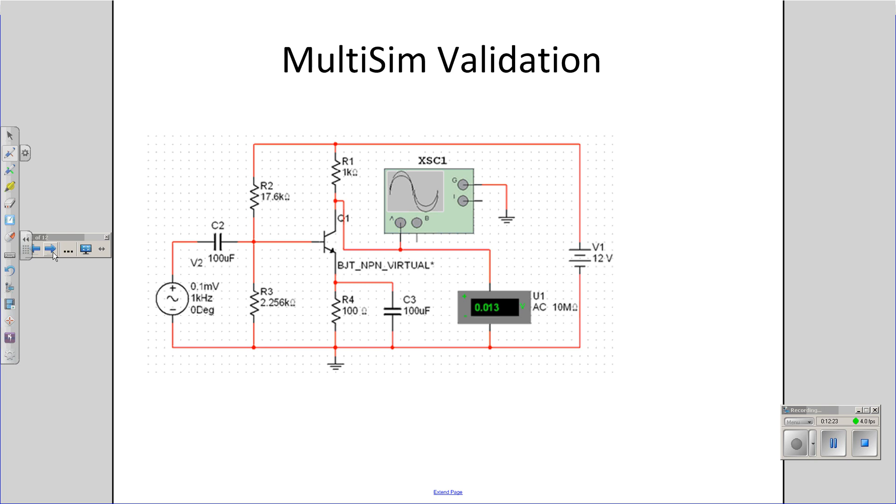When you build a circuit in the lab, that's the actual gain of the circuit that you have with no approximations. This gives us the common emitter amplifier. Next, we'll look at the common base and common collector.